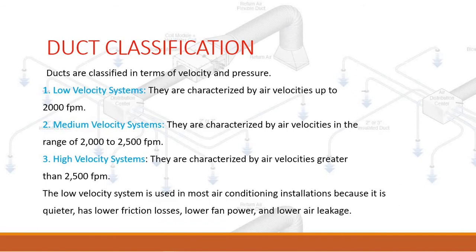Duct classification. Ducts are classified in terms of velocity and pressure. One: low velocity systems, characterized by air velocities up to 2000 FPM. Two: medium velocity systems, characterized by air velocities in the range of 2000 to 2500 FPM. Three: high velocity systems, characterized by air velocities greater than 2500 FPM.